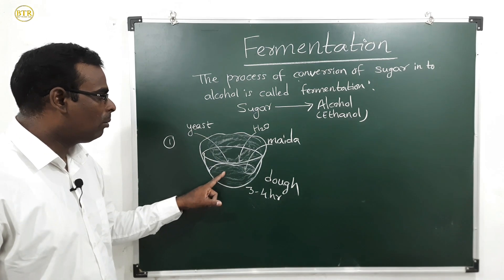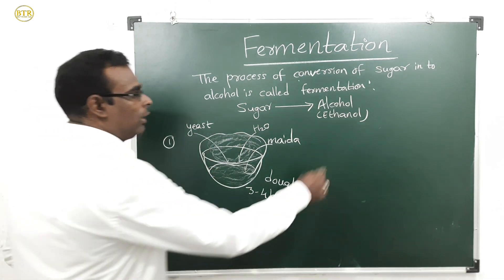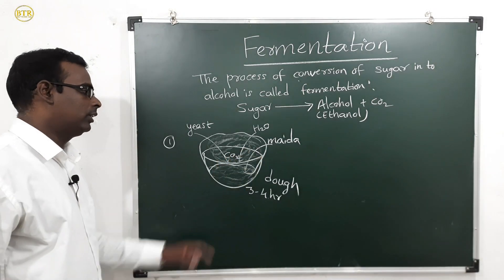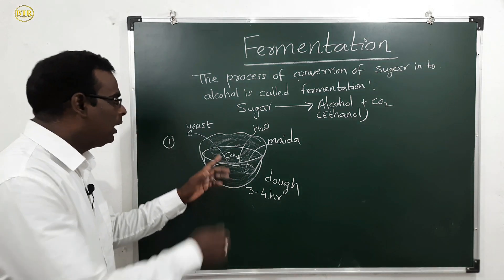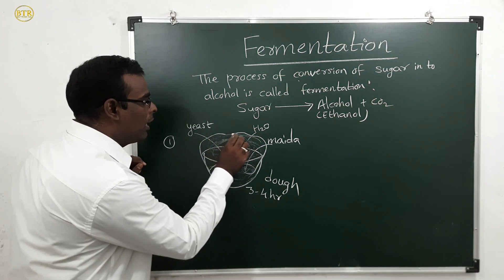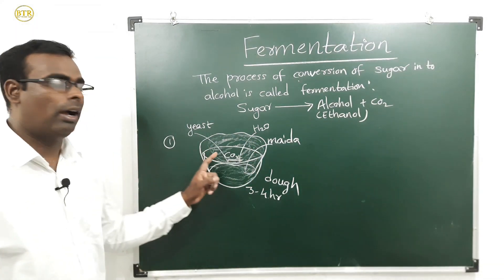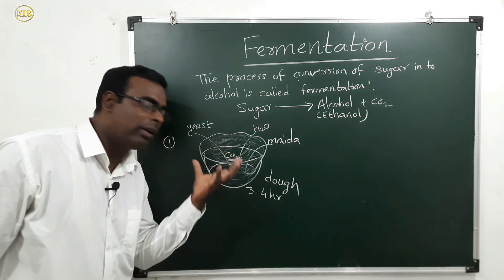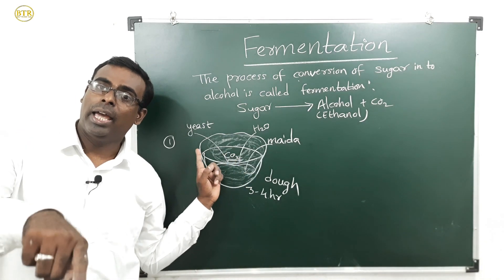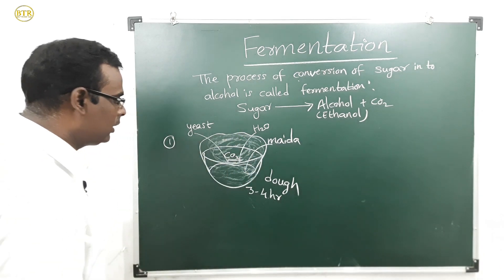Yeast is converting the sugars in the maida into alcohol, and in this fermentation process, carbon dioxide is also produced. The carbon dioxide goes outside through the maida dough by making holes, so the volume of the dough increases. The dough also gives an alcohol smell, because alcohol is produced by yeast through the fermentation process. This is an example of fermentation.